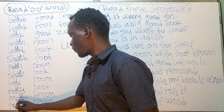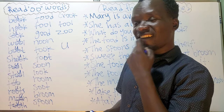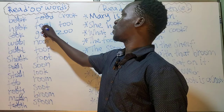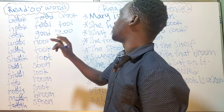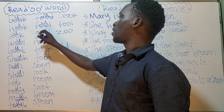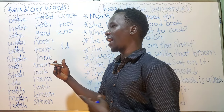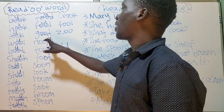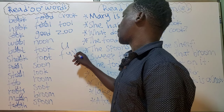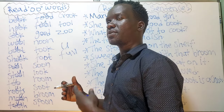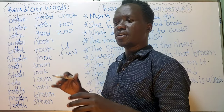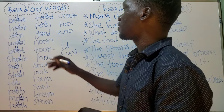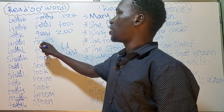Moon. Tooth. Food. Now, 'fool' — this fool is for someone who is stupid, a foolish person. But 'full' — this full means that a container, a jerry can, or a drum is full of a substance. This one means full of content, but this one means a stupid person. Noon.